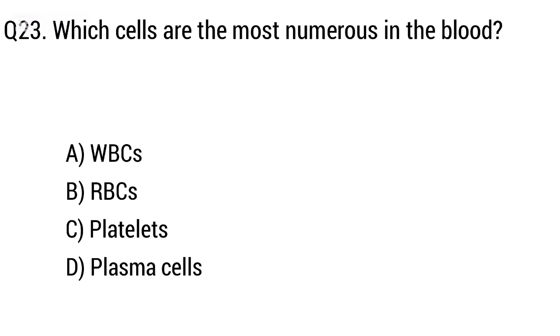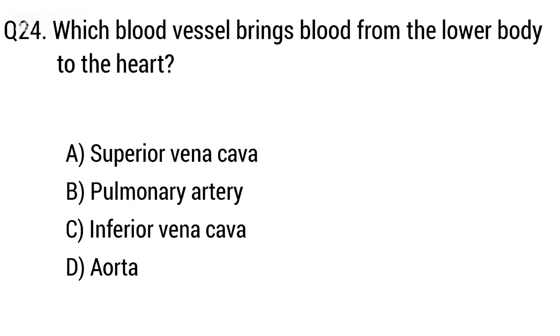Question 23: Which cells are the most numerous in the blood? Option A: white blood cells, B: red blood cells, C: platelets, D: plasma cells. The right answer is option B, RBCs.